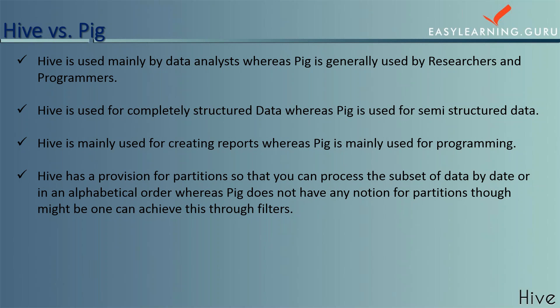Hive is mainly used for creating reports while Pig is used for programming. Both Hive and Pig are frameworks that utilize Hadoop underneath, and both ultimately result in single or multiple MapReduce job creation to get the required output. Hive is recommended for people who are familiar with SQL, and Pig is recommended for people familiar with scripting languages like Python.